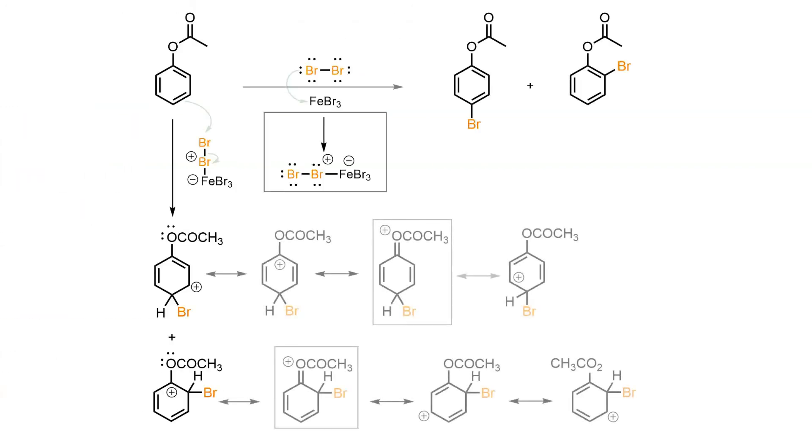In both the para- and ortho-pathways, the charge is not only spread over the pi system in the cycle, but also onto the external oxygen, as shown in the highlighted resonance structures.